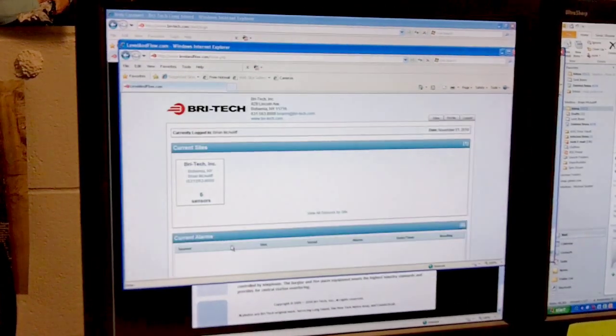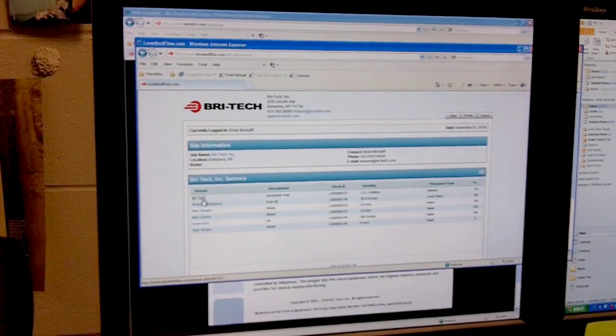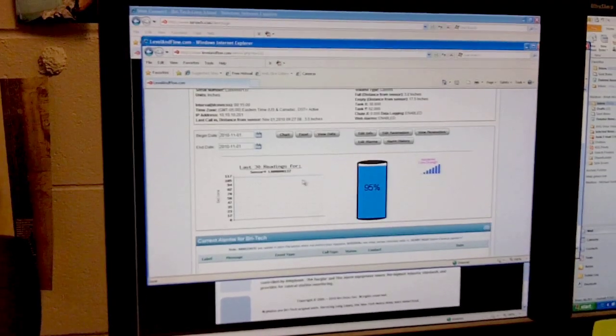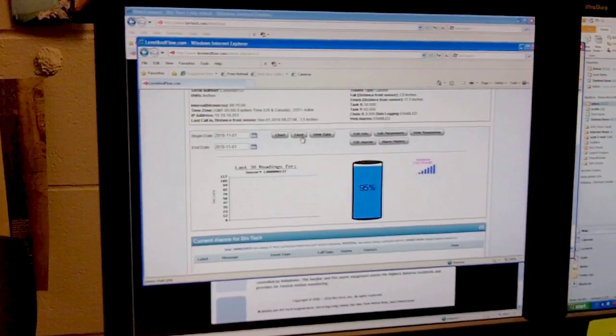But if I want to get a little more information, I can click on detailed information, I get to the main sensor site, I see all my sensors, click on that sensor, I can see how much fuel I've been using, I can change my dates, and even download it to Excel.